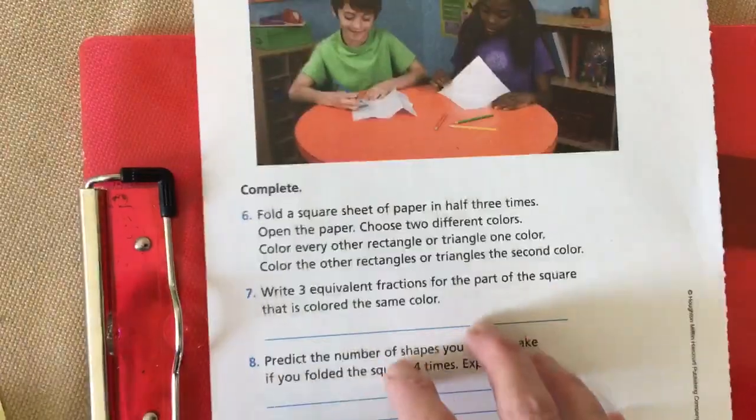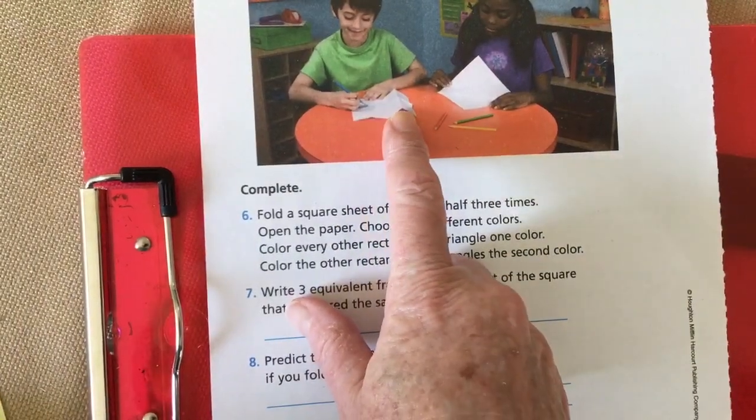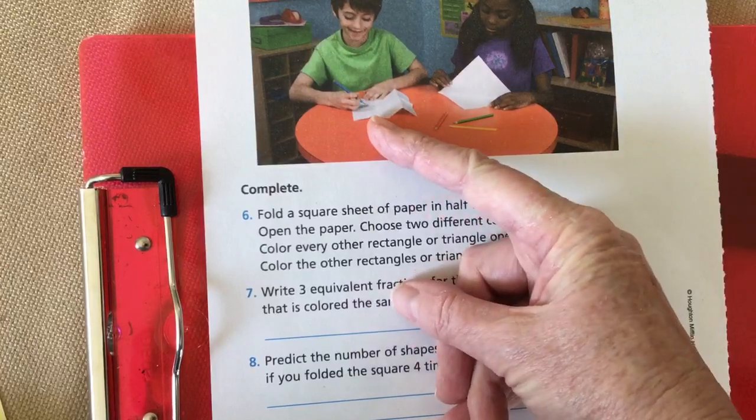But I did mine into triangles. I'm thinking he did not do his into triangles. He folded it like—what do we call that?